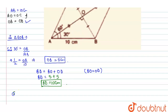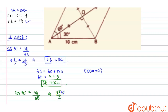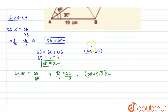Now for the second diagonal, I will take cos 30 degrees in triangle AOB. Cos 30 degrees equals the base upon hypotenuse, that is OA upon AB. The value of AB is 10 and the value of cos 30 degrees is root 3 upon 2. So root 3 upon 2 equals OA upon 10.